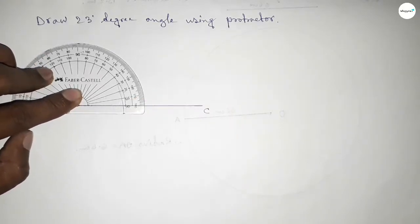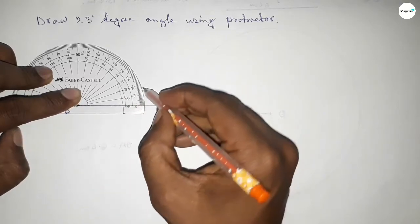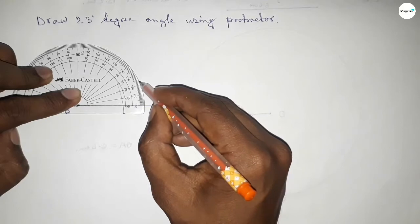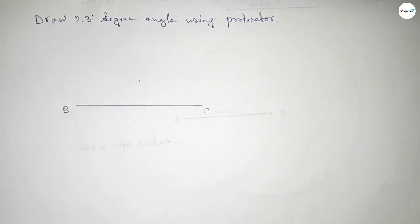So this is starting 0, 10, 20, 21, 22, 23. So this is 23 degrees.